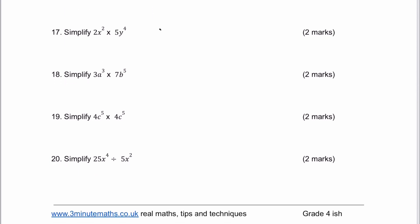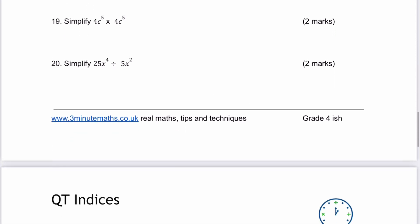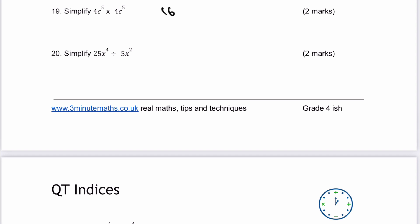Number 18: 3 times 7 is going to be 21, then we've got a to the 3 and b to the 5. Number 19 is slightly different because we've got 4 times 4, which is 16. Then c to the 5 times c to the 5 is going to be c to the power of 10.